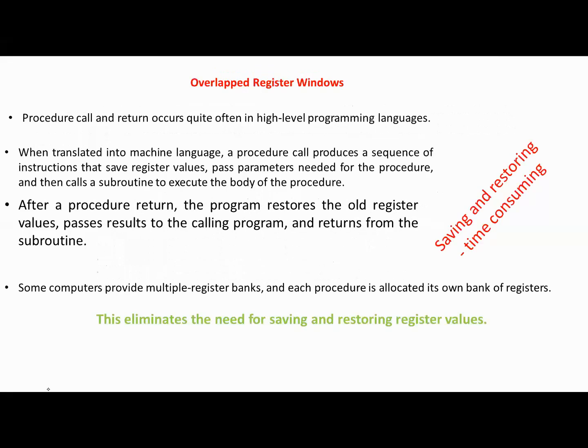Next, overlapped register windows. Procedure call and return occurs quite often in high-level programming languages. When translated into machine language, a procedure call produces a sequence of instructions that save register values, pass parameters needed for the procedure, and then calls a subroutine to execute the body of the procedure. After a procedure return, the program restores the old register values, passes results to the calling program, and returns from the subroutine.